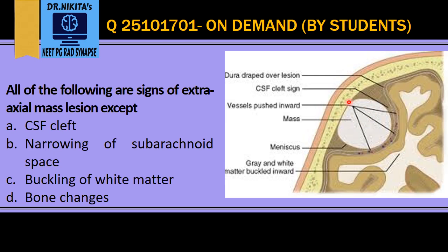First, the CSF cleft sign. An extraaxial mass pushes the meninges inside, thereby creating a CSF cleft. So that is the CSF cleft sign. You see this dura draped over the lesion. The vessels which come in the meninges are pushed inwards. And you see a meniscus here.